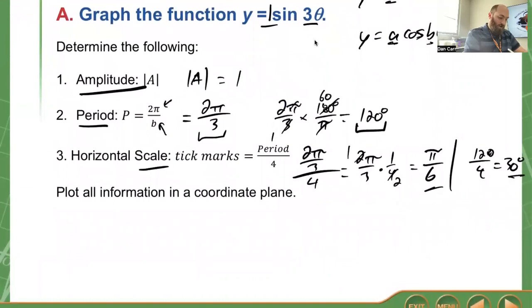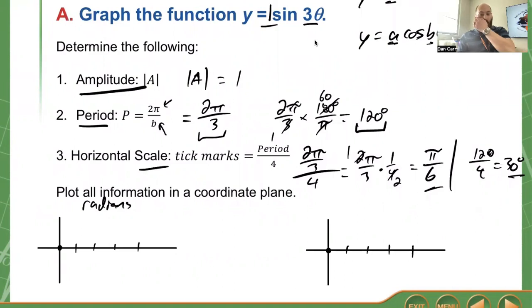Now I want to plot all the information on a coordinate plane. We're going to do a rough sketch of the graph. I'm going to do both radians and degrees. In terms of radians, we start at (0,0) and go 1, 2, 3, 4 tick marks. Every pi over 6 is each tick mark. This is pi over 6, this is 2 pi over 6 which reduces to pi over 3, then 3 pi over 6 which is pi over 2, and 4 pi over 6 which is 2 pi over 3.